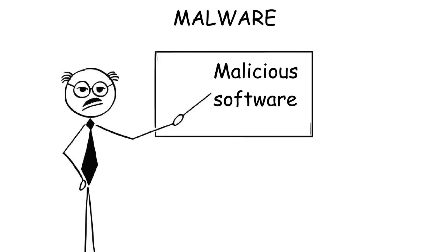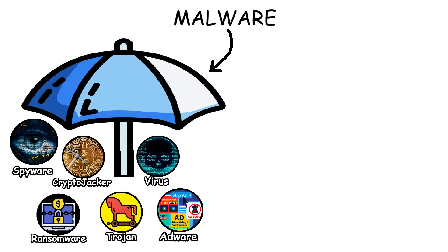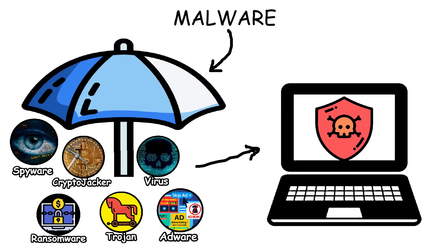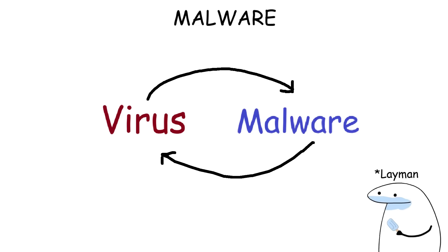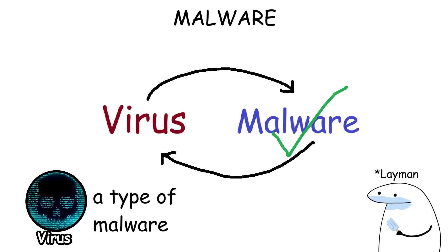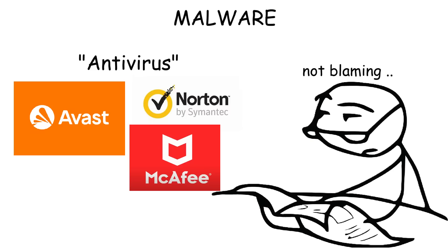Malware stands for malicious software, and it is the umbrella term for any software that's harming or exploiting your computer. Most people use the terms malware and virus interchangeably, but malware is actually the most correct term, because virus is just one type of malware among many other kinds. Even cybersecurity companies call their software antivirus, not anti-malware.